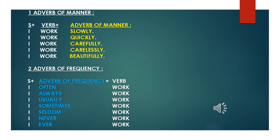And then we will discuss the adverb of frequency — how often are you? How is the frequency for you to do something? I often work. I always work. I usually work. I sometimes work. I seldom work. I never work. I ever work.